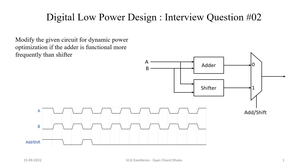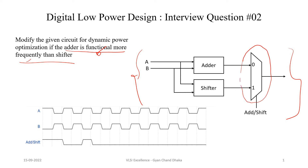Here we have been given a circuit and we are asked to modify it for dynamic power optimization. The condition given is that the adder is functional more frequently than the shifter. There is a MUX which selects either the adder output or the shifter output, and the waveform describes the functionality of this circuit. When the selection line is 0 it selects the adder output, and when it is 1 the MUX selects the shifter output.